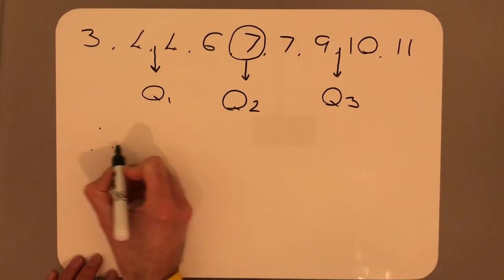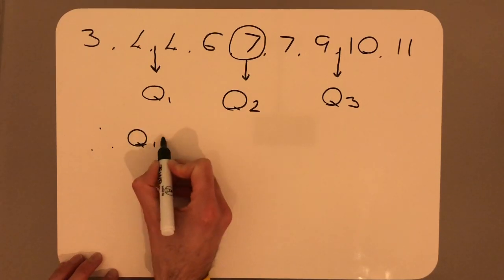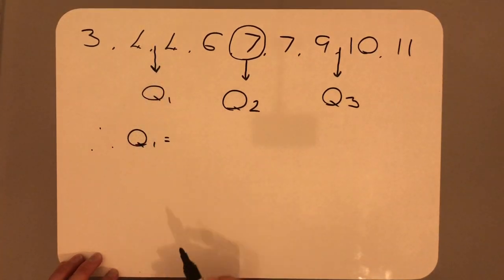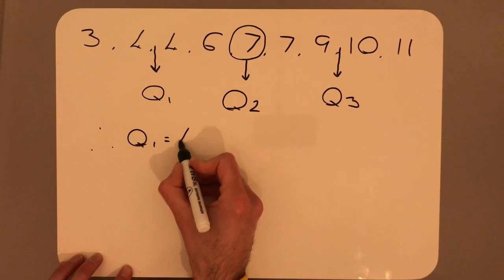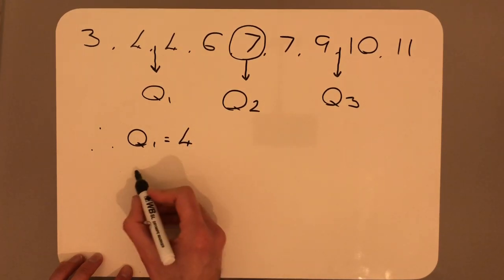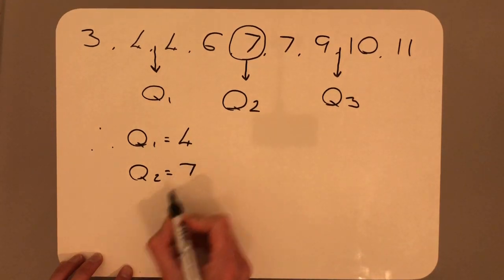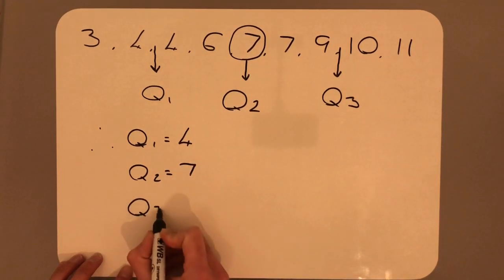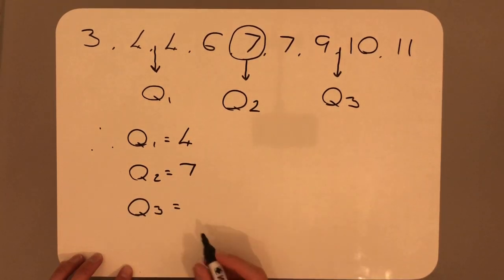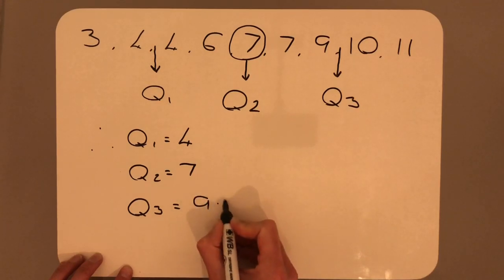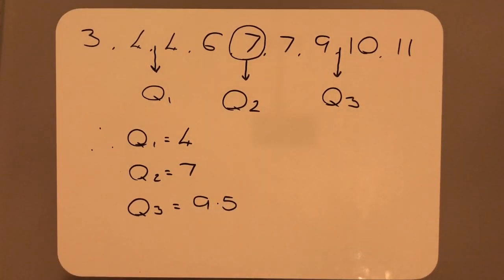Listing them, we now have Q1. That's in between 4 and 4, which will simply just be 4. Q2 is the number 7. Q3 is in between 9 and 10, which is 9.5.